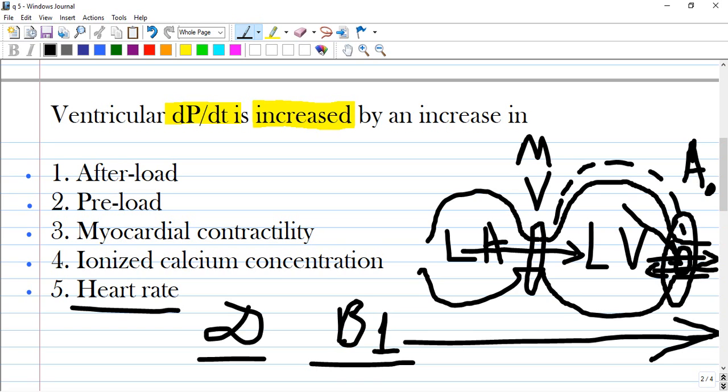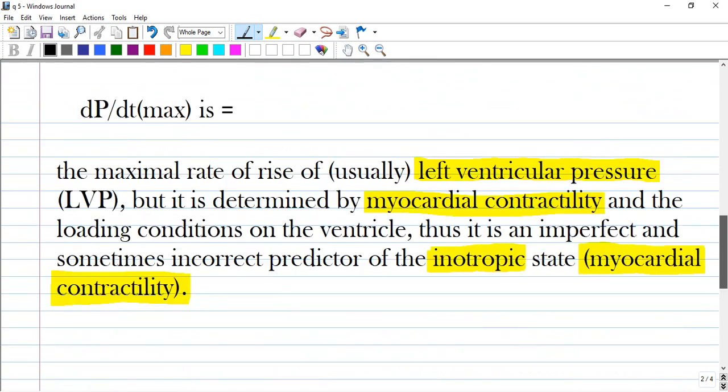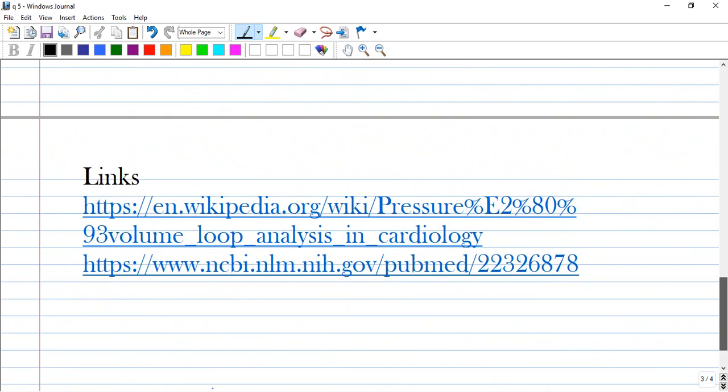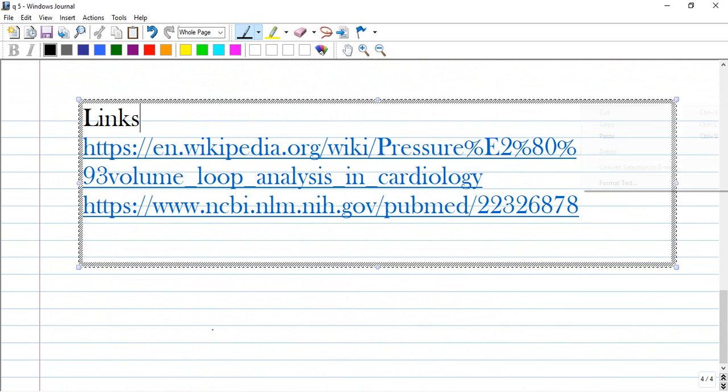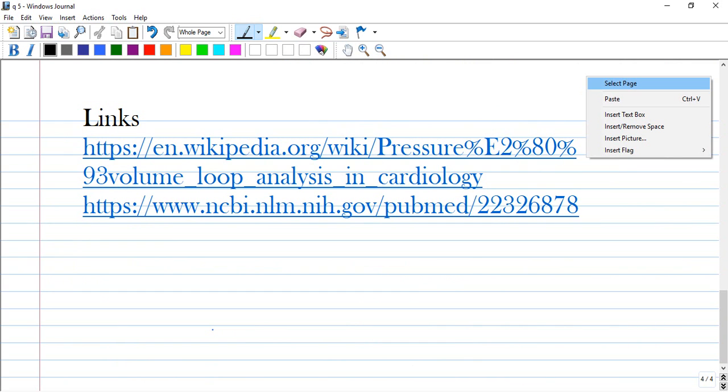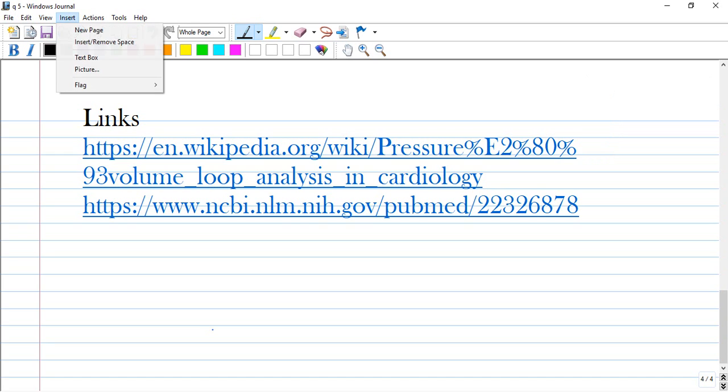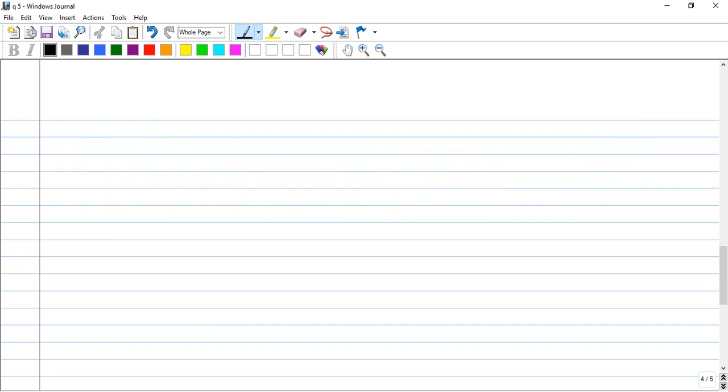How does heart rate increase myocardial contractility? Also, calcium increases contractility, and magnesium is an antagonist of calcium. You should know.